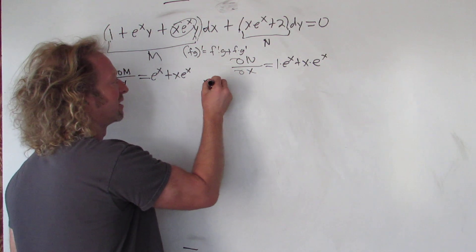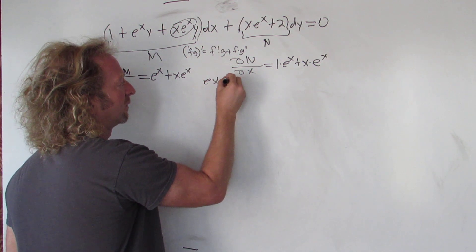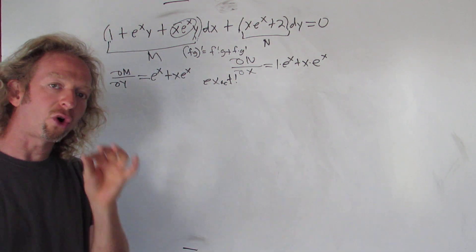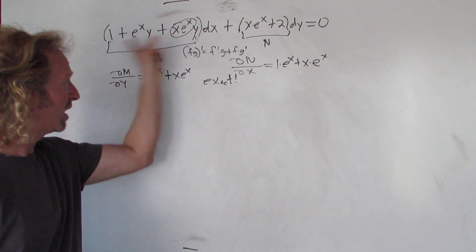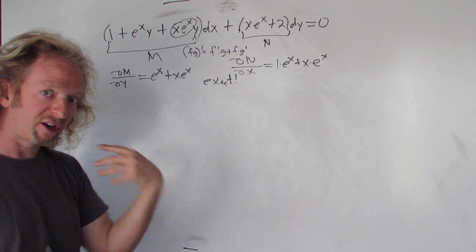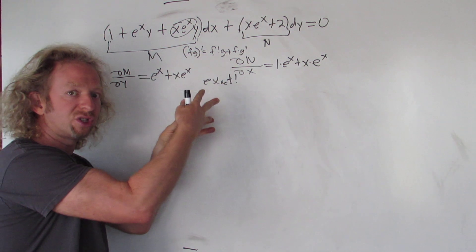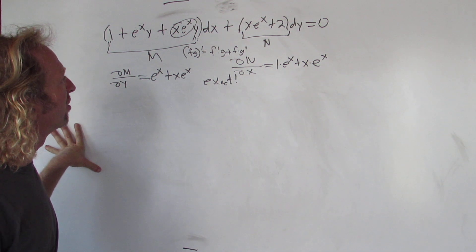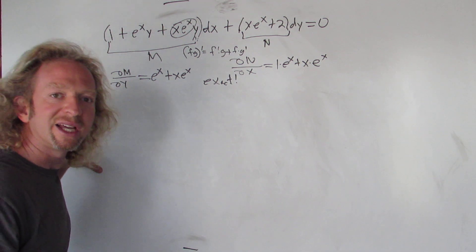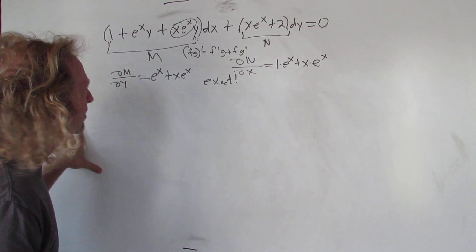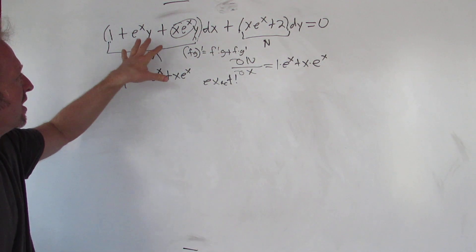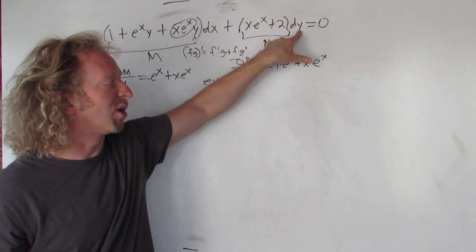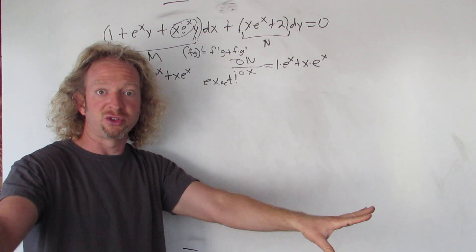Since ∂M/∂y equals ∂N/∂x, the DE is exact. That means there is a function whose total differential is equal to this differential equation — in other words, that function is a solution. There are a couple of ways to do this: the fast way or the short way. The fast way is you integrate M with respect to x, integrate N with respect to y, then use matching and you're done.